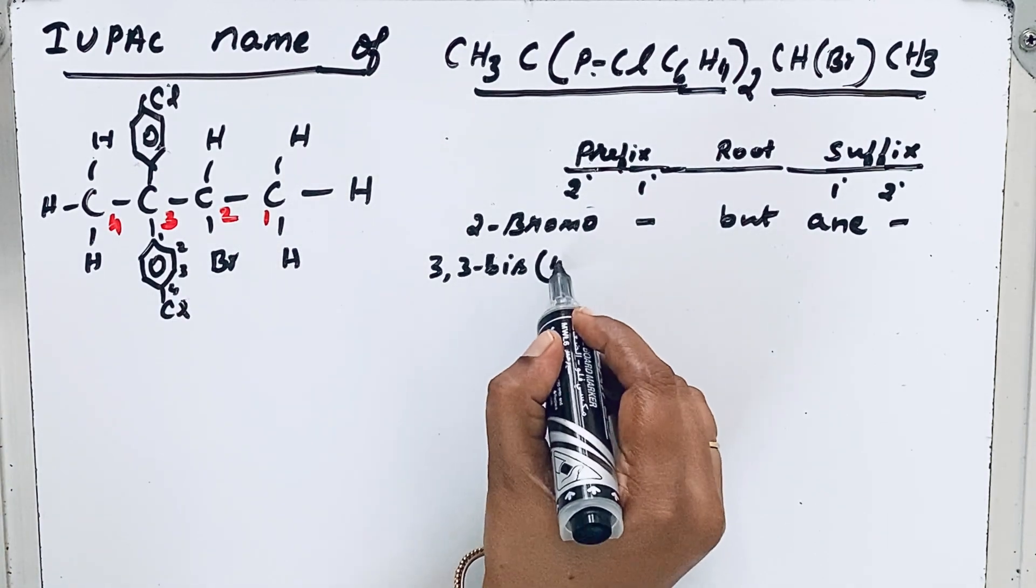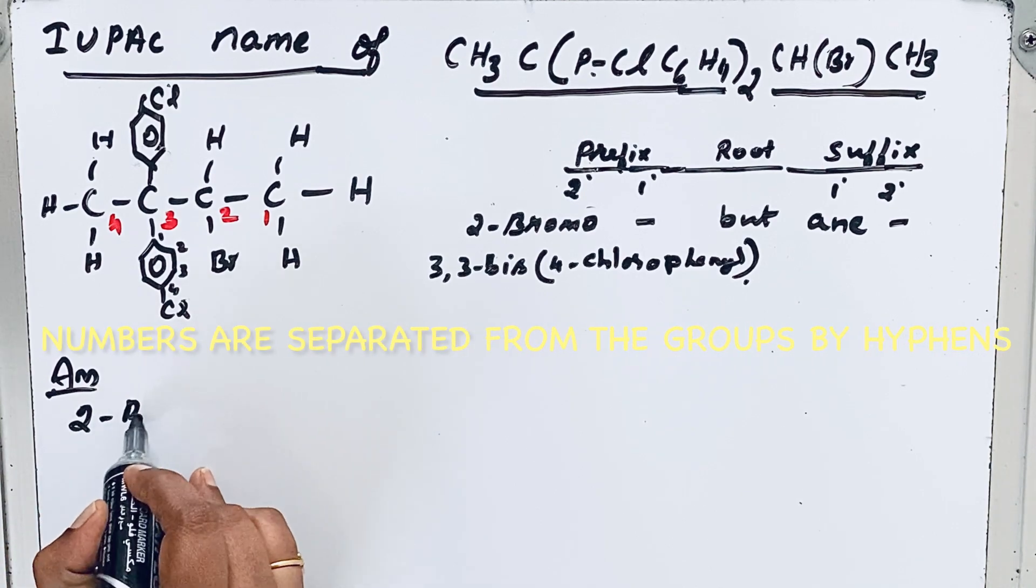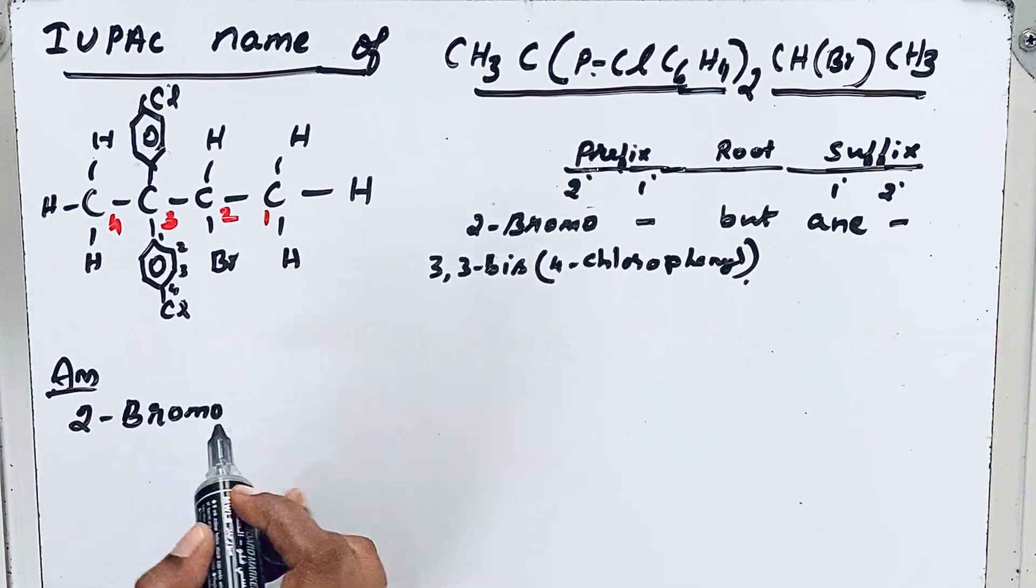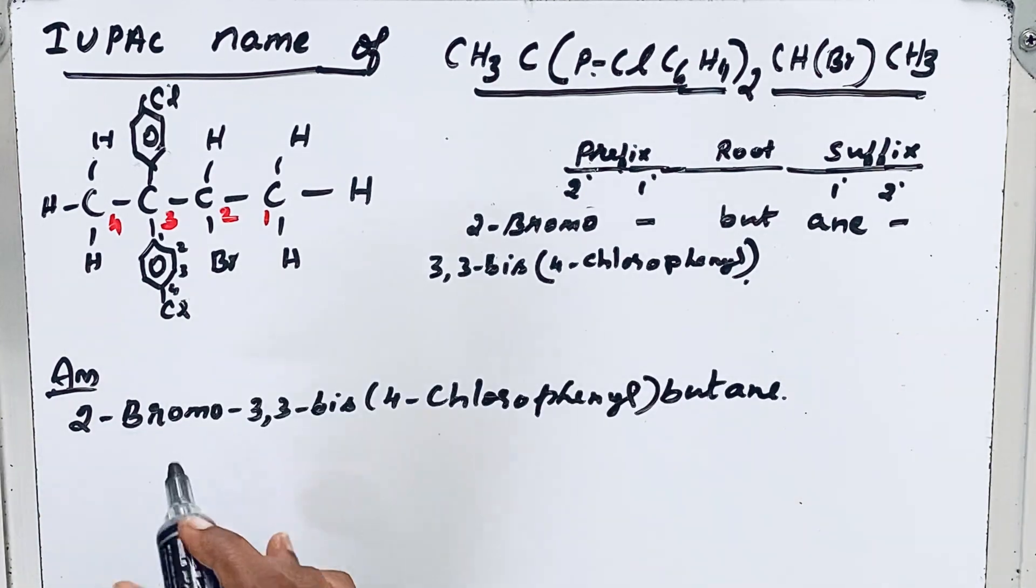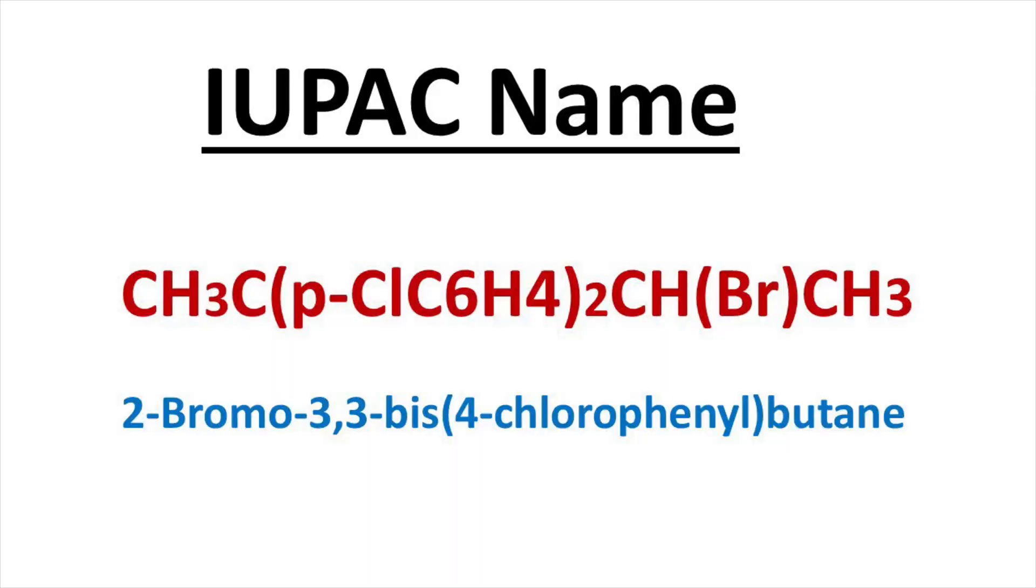So 2-bromo-3,3-bis(4-chlorophenyl)butane is the IUPAC name of this compound. Thanks for watching.